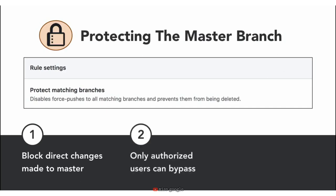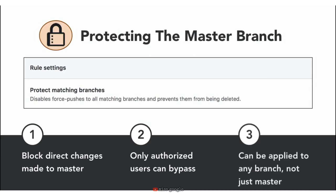Preventing people from contributing directly to master without being authorized is pretty much common sense, especially if you're treating the master branch as your mainline branch deployed into production. You can also create a branch rule in a repository for a specific branch, all branches, or any branch that matches a specific naming pattern. Keep in mind that even though I'm talking about master, you can really apply these same branch protections to any branch.